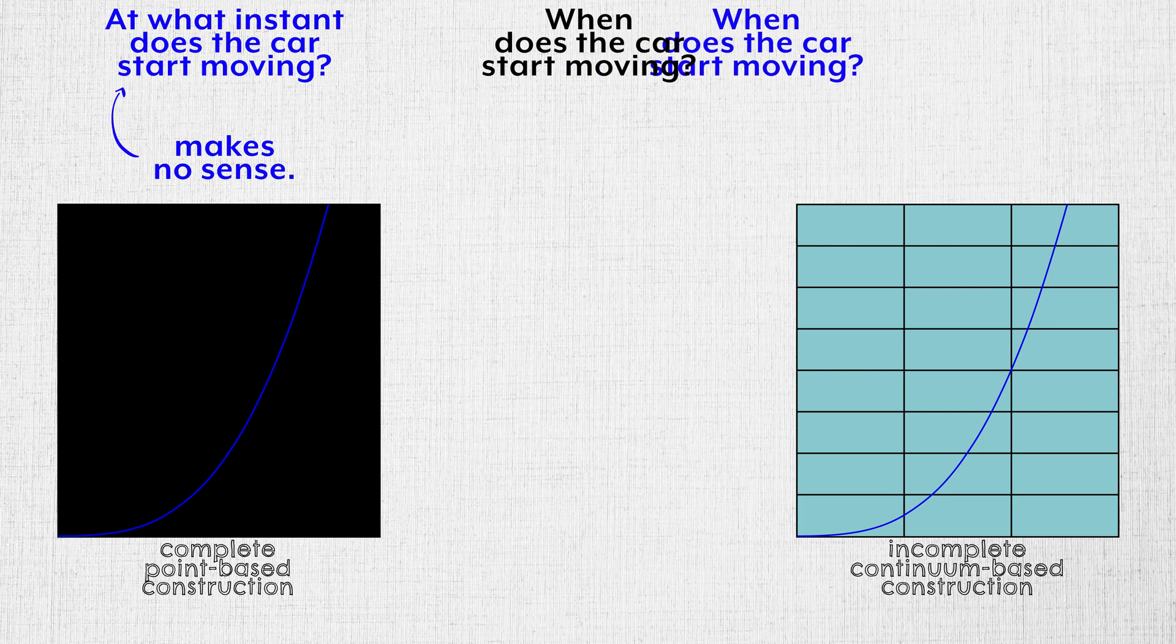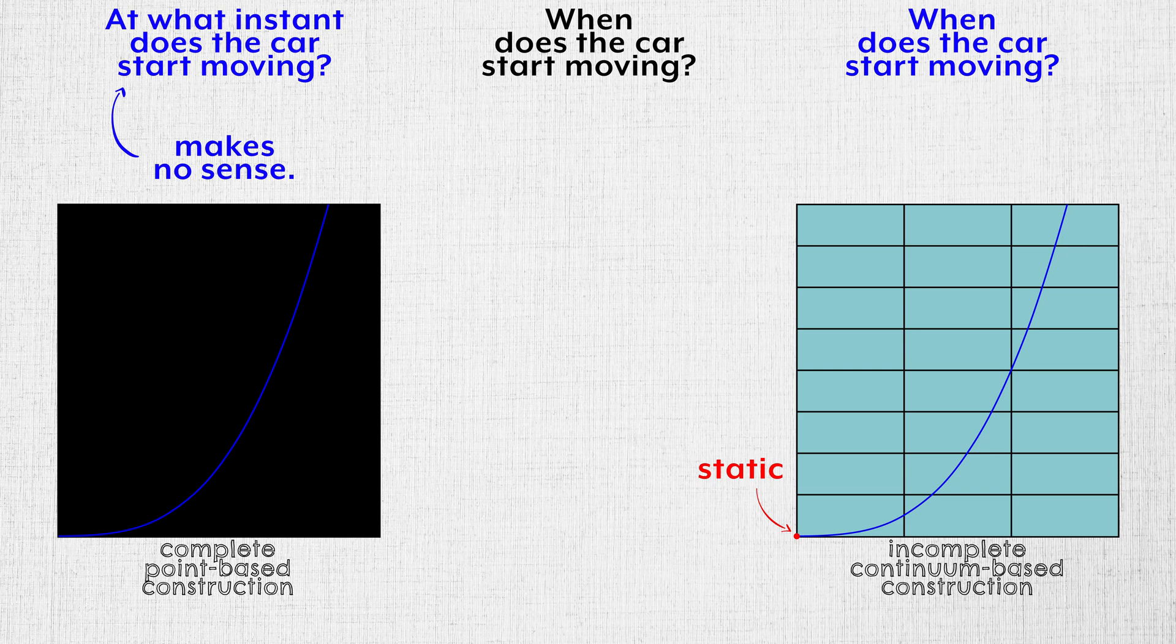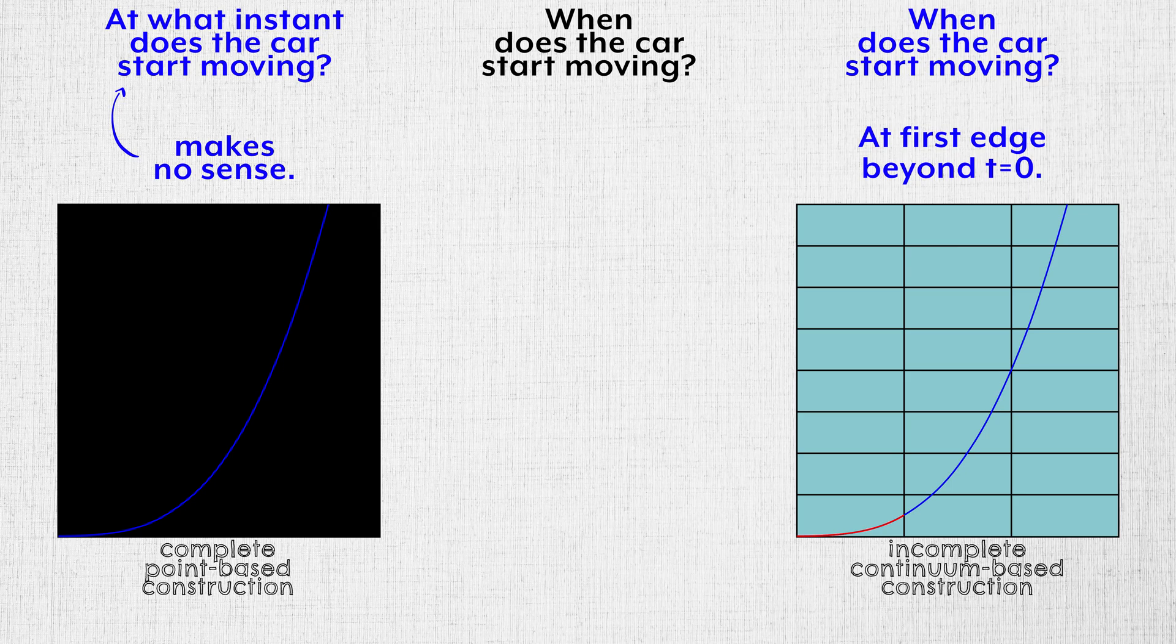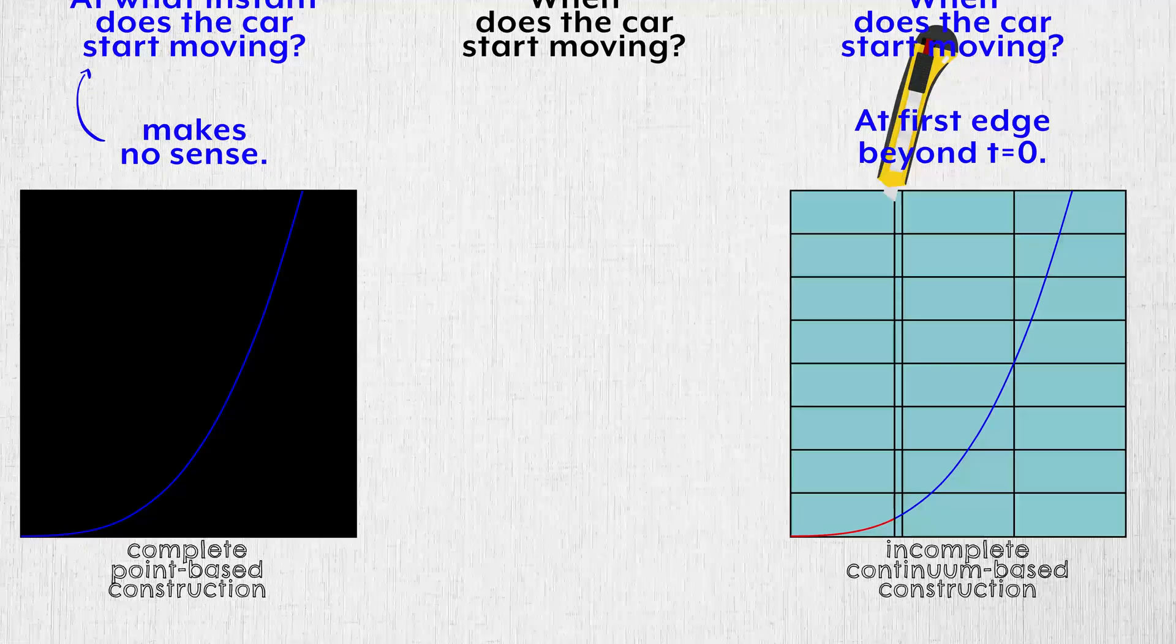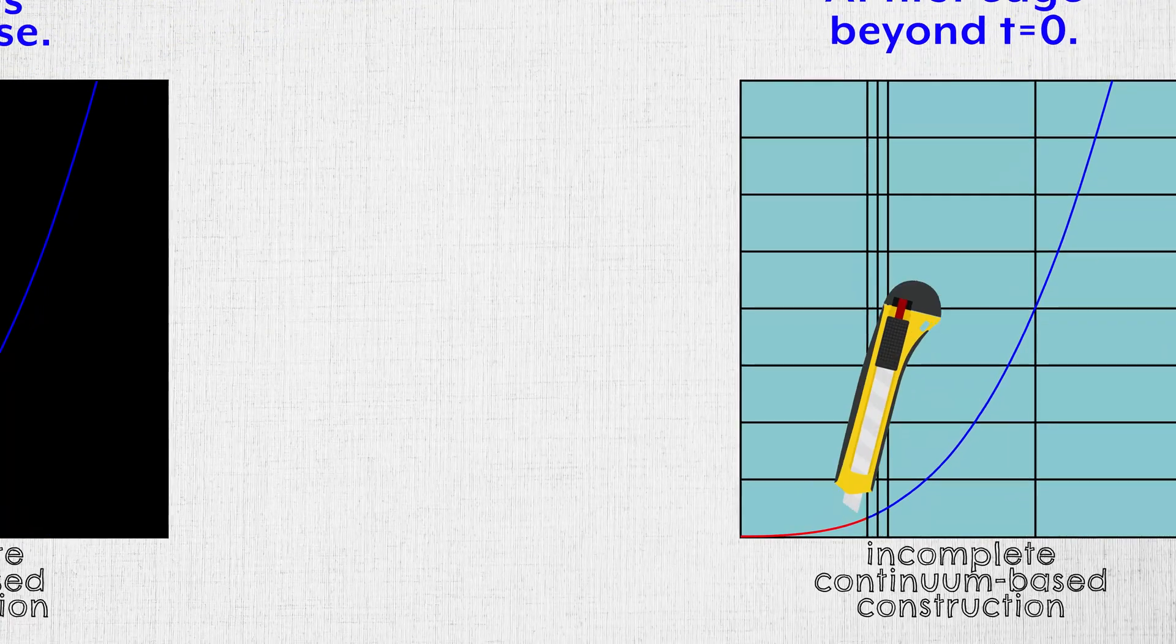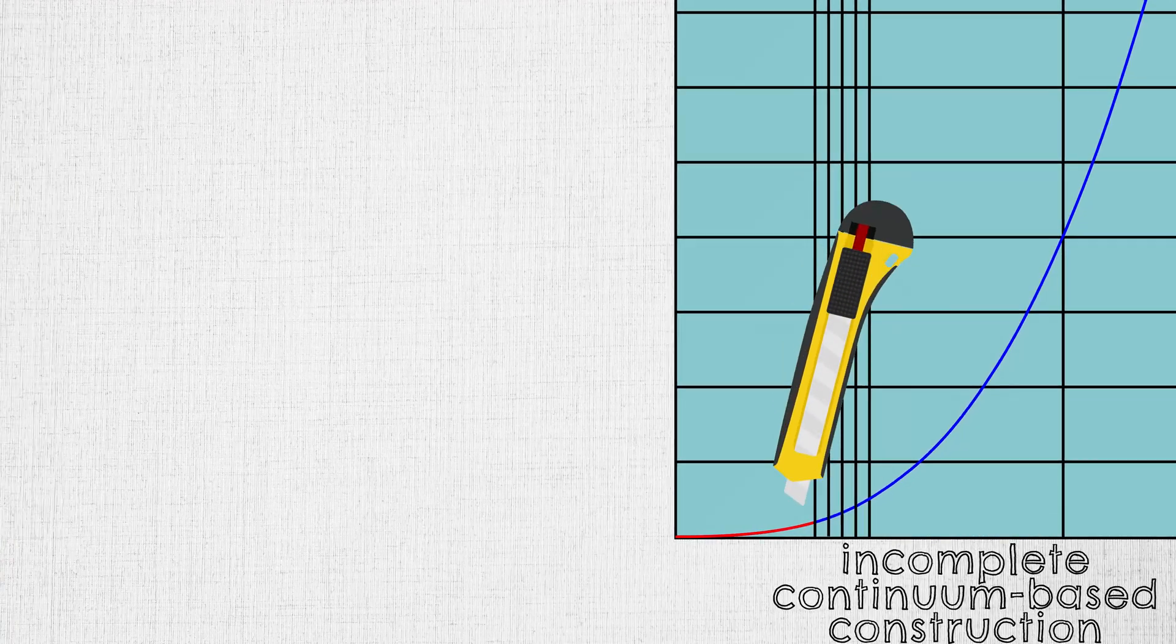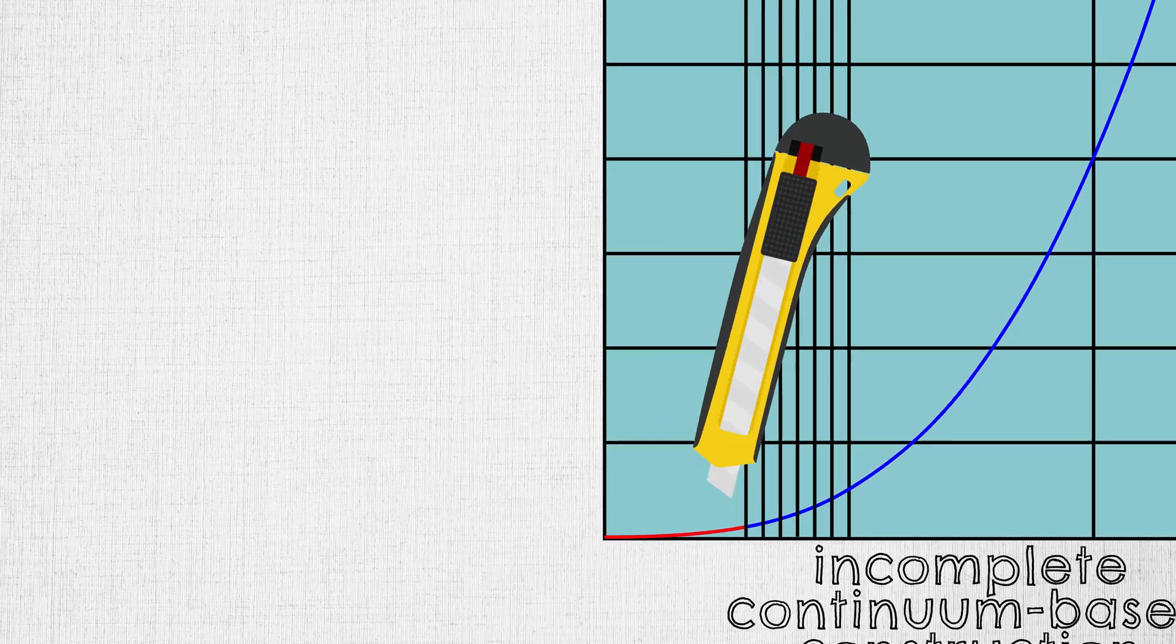But what about the incomplete construction? Change doesn't happen at a vertex. So the car is static at the vertex corresponding to t equals zero. Change happens between vertices, along the edges. So the car starts moving at the first edge beyond zero. And if that edge is too long for our liking, we can cut it, and cut it, and keep on cutting it such that its length approaches zero. With this construction, that's what a derivative is.